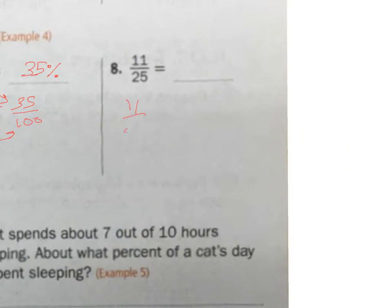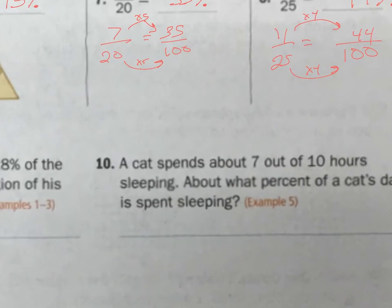And one more. 11/25 equals... I know I can get 25 to 100 by timesing it 4. So times 4 is 44. So 11 over 25 is 44%.